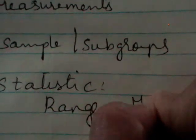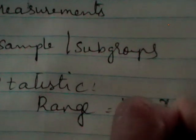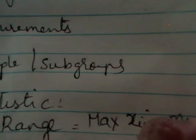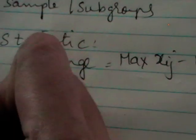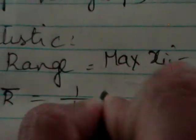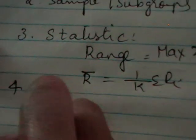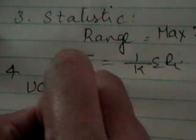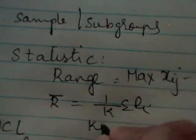What is the statistic here? Statistic here is range. How do you define range? Range as maximum of XIJ minus minimum of XIJs. We will calculate the range. After that, we will calculate R bar. R bar is nothing but 1 by K sigma R. After this, UCL and LCL R chart and CL R chart.